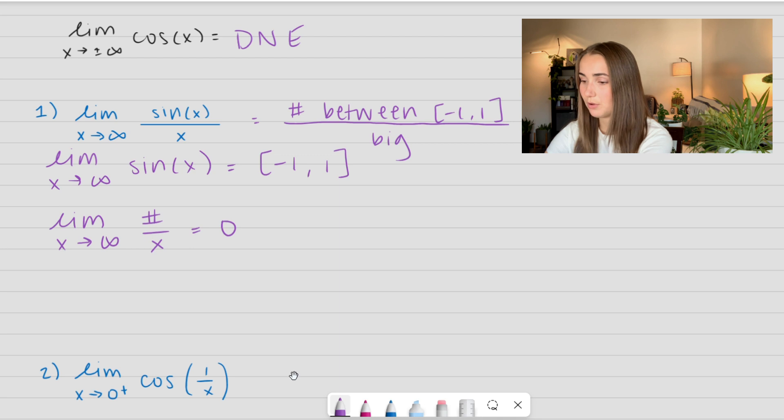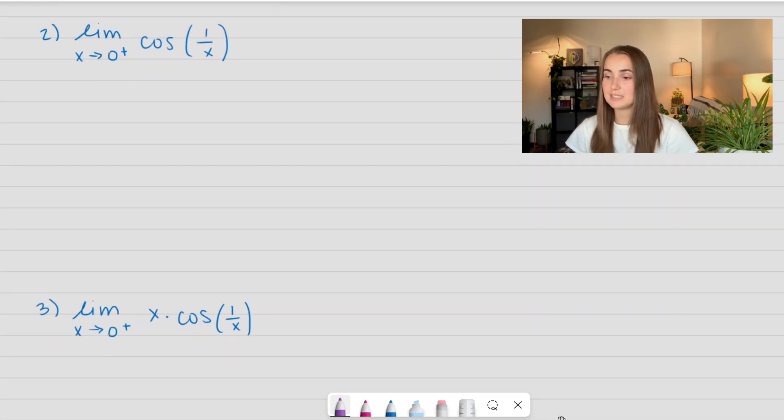Let's see another example. We have the limit as x approaches 0 from the right side, so from the positive side of cosine of 1 over x. First, let's go ahead and look at our inside, the limit as x approaches 0 from the right of just 1 over x.